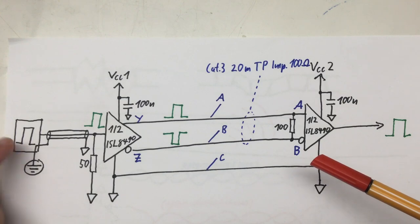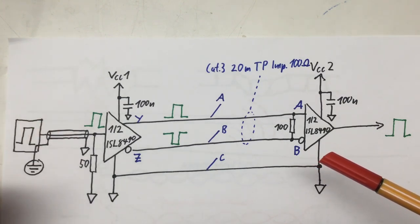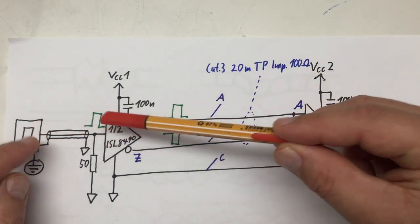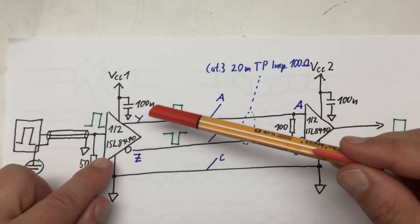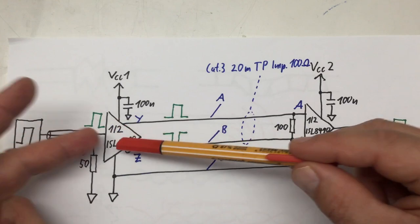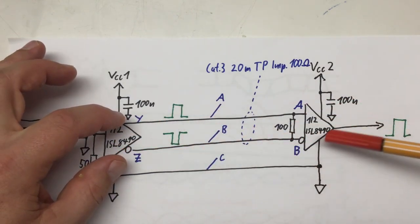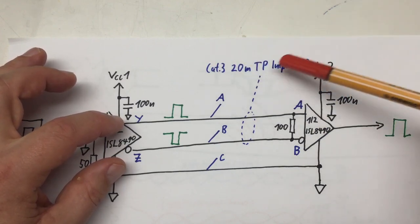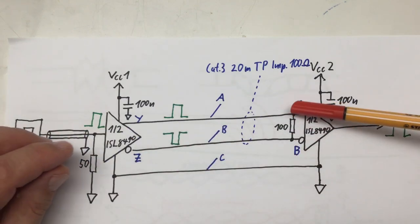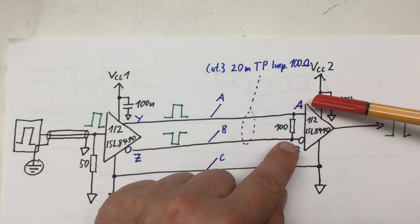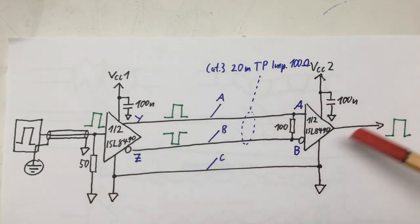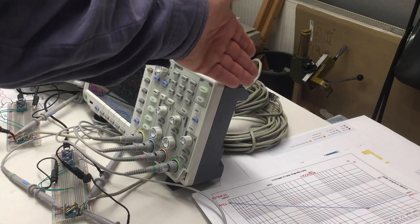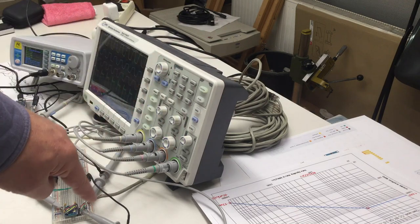Here's a short recap. I have my function generator churning out a 10 megahertz square wave logic level signal through a 50 ohm coax cable to my left breadboard, where it's terminated with a 50 ohm resistor. That goes into one half of an ISL-8490 transceiver, the transmitter part, and is sent via twisted pair Cat 3 cable, 20 meters in length, impedance 100 ohm, over to the right breadboard where it's terminated with a 100 ohm resistor and goes into the receiver part of another ISL-8490 transceiver.